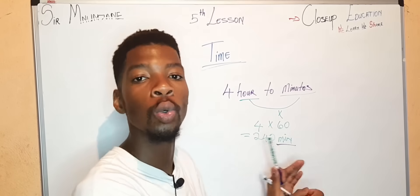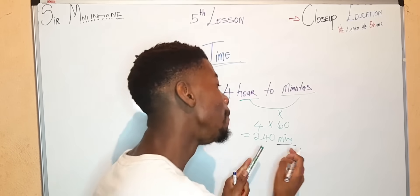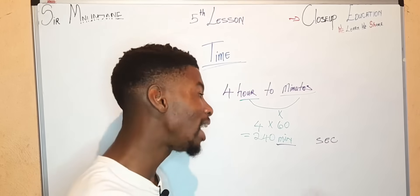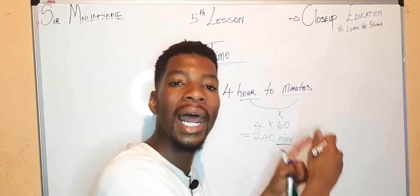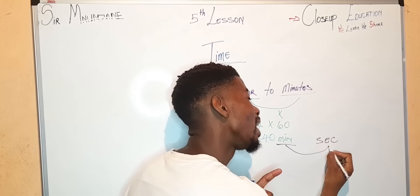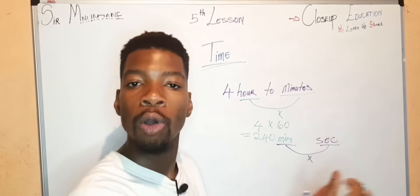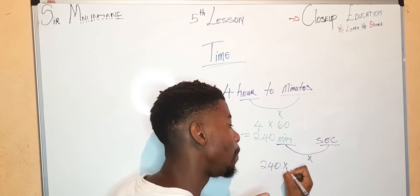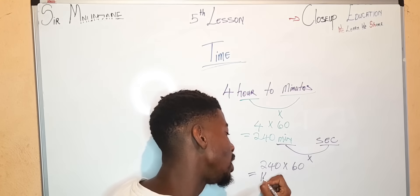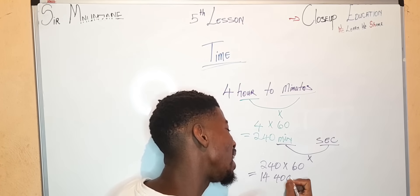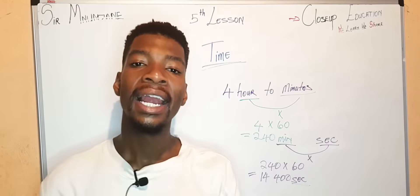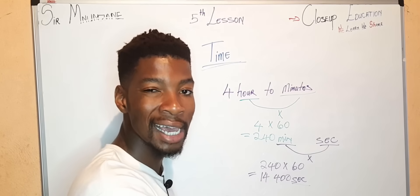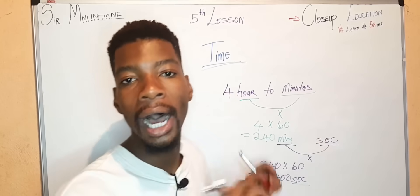Now convert 240 minutes into seconds. We know that from bigger to smaller we multiply. So we say 240 multiplied by 60 equals 14,400 seconds.